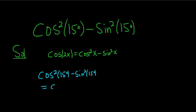And that's equal to cosine of 2x. So it's 2 times 15 degrees. So this is equal to cosine of 30 degrees.